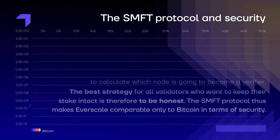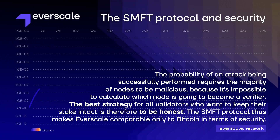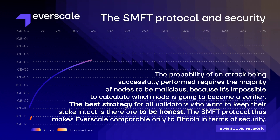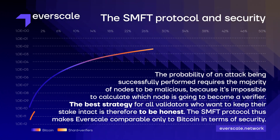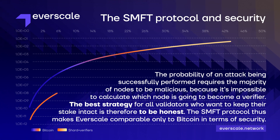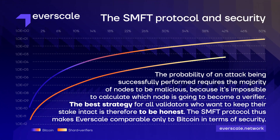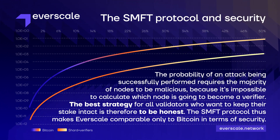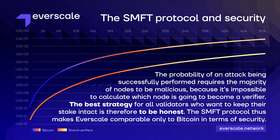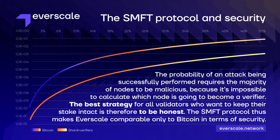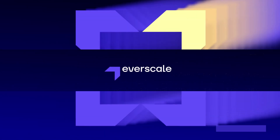The probability of an attack being successfully performed requires the majority of nodes to be malicious, because it's impossible to calculate which node is going to become a verifier. The best strategy for all validators who want to keep their stake intact is therefore to be honest. The SMFT protocol thus makes Everscale comparable only to Bitcoin in terms of security.